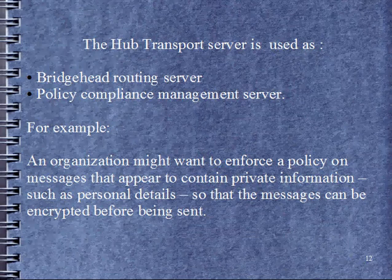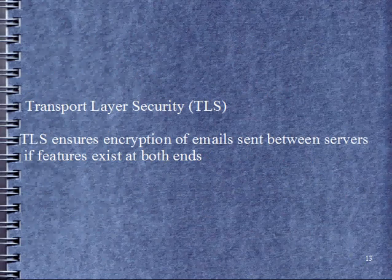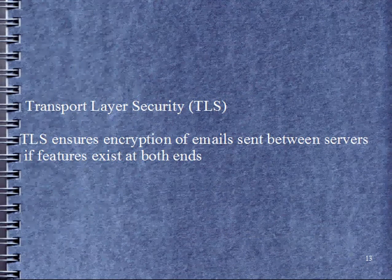The Hub Transport Server also acts as a Policy Compliance Management Server. For example, an organization might want to enforce a policy on messages that appear to contain private information such as personal details, so that messages can be encrypted before being sent. Transport Layer Security (TLS) ensures encryption of emails sent between servers if the feature exists at both servers.